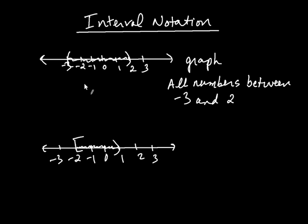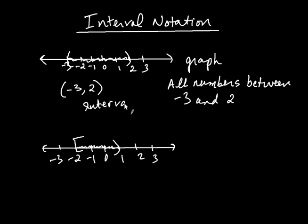There's a more convenient way of denoting this set. We use a parenthesis on the left because a parenthesis was used here, and we put negative 3 comma 2 and use a parenthesis after the 2. This is called interval notation. It denotes the same set of numbers that the graph denotes — it's just a more convenient way to do so. The parentheses are used because negative 3 and positive 2 are not included, so there are an infinite number of numbers in this collection.